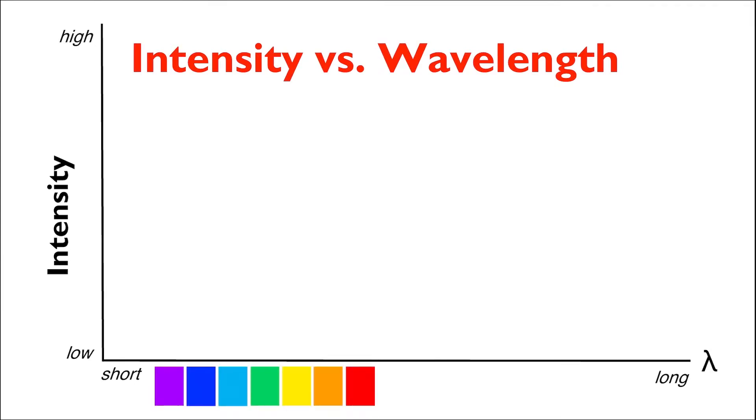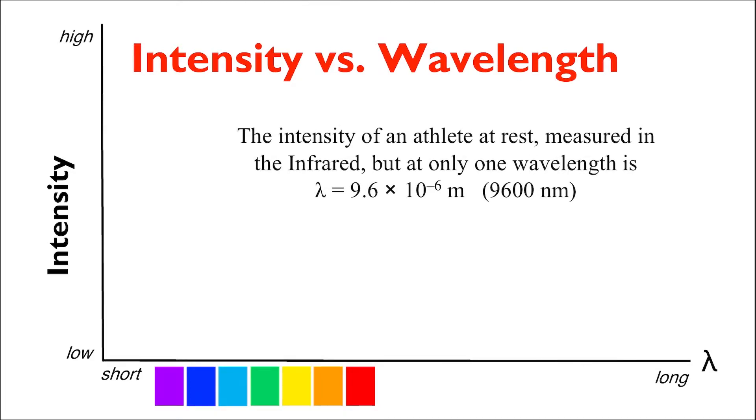Now imagine there's an athlete at a track meet ready to participate in a 500 meter dash at a tournament. Let's say the thermal intensity or the heat coming off the body of this athlete before the 500 meter dash is measured in the infrared at only one wavelength, 9600 nanometers. Now before the dash, there's a low amount of thermal energy detected from the athlete.